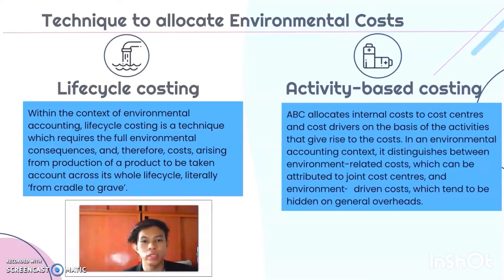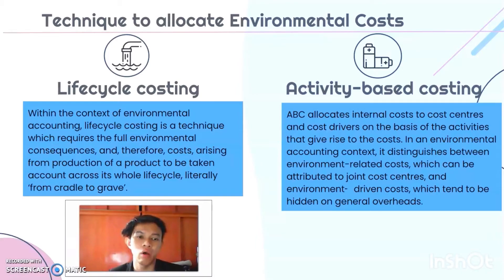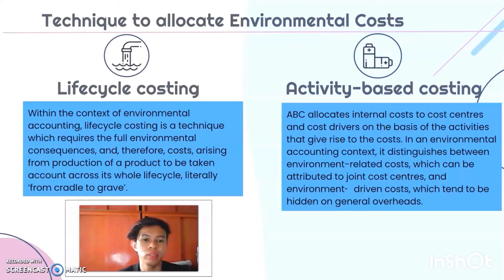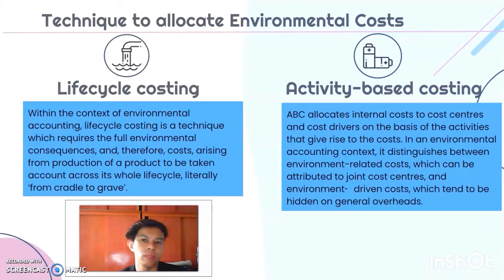The fourth technique is activity-based costing. This allocates internal costs to their respective cost centers and cost drivers on the basis of the activities that give rise to the costs. In an environmental accounting context, it distinguishes between environmental-related costs attributable to joint cost centers and environmental-driven costs that tend to be hidden in general overheads.